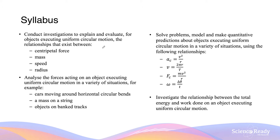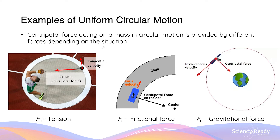This video focuses on circular motion involving horizontal and banked surfaces. In the introduction video we discussed that the centripetal force required for circular motion is provided by different types of forces depending on the scenario. In this video we will be focusing on vehicles and masses that undergo circular motion when they are on a horizontal or on a banked surface.